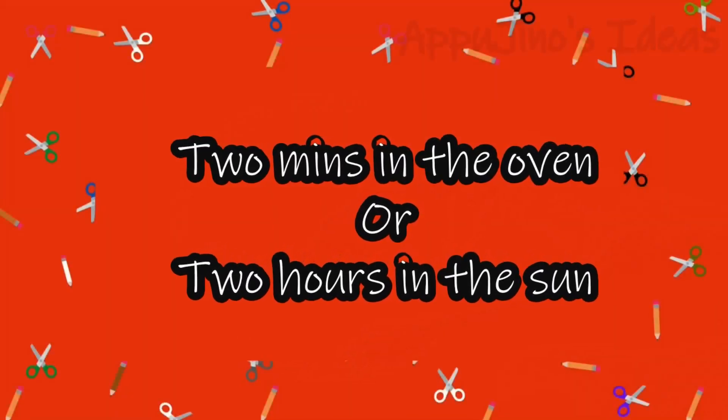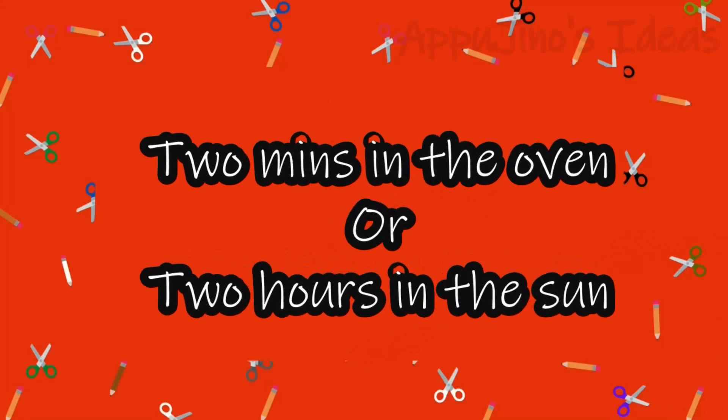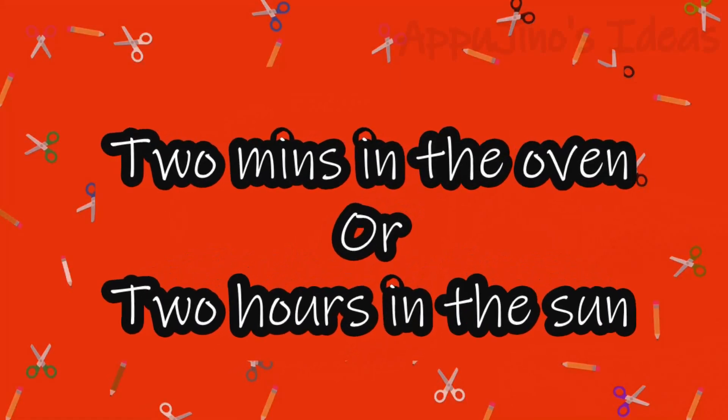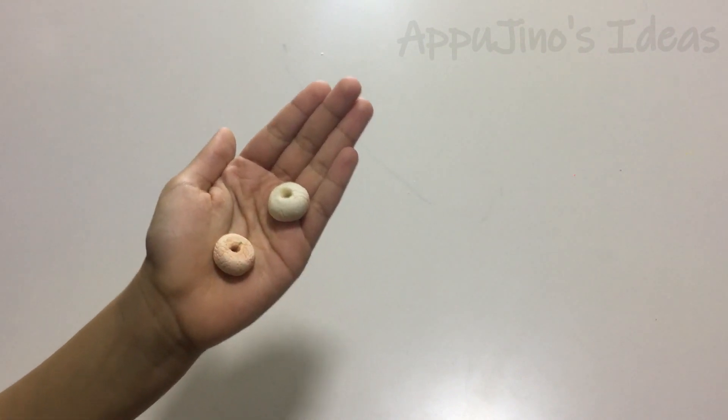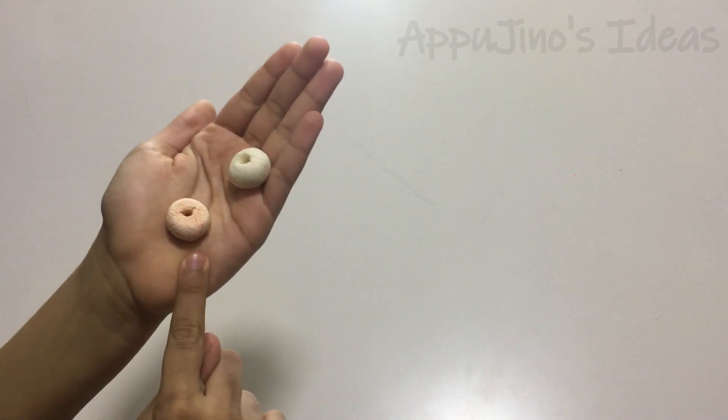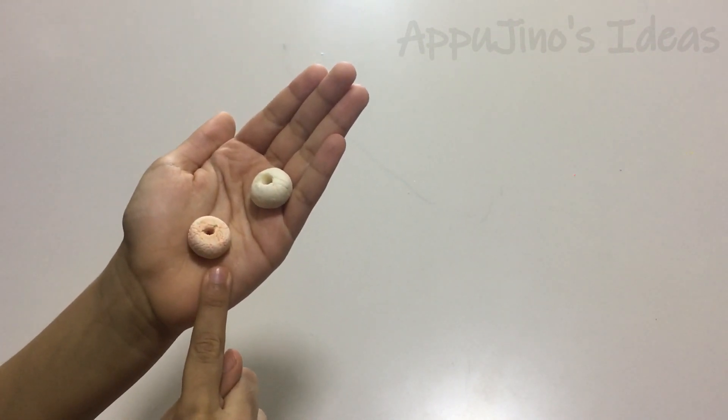Put it in the oven for two minutes or under the sun for two hours. The difference of beads under the sun is that it won't become fluffy.